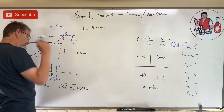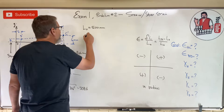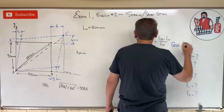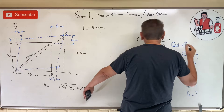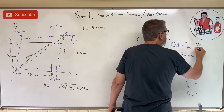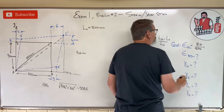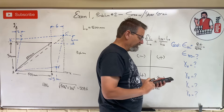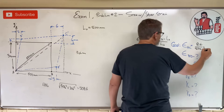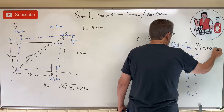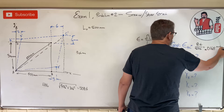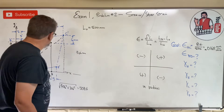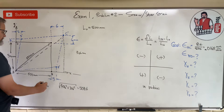It started at 500 and is now 508.4, so it grew 8.4 mm. Strain AC = 8.4 / 500. That's our first answer in millimeters per millimeter.